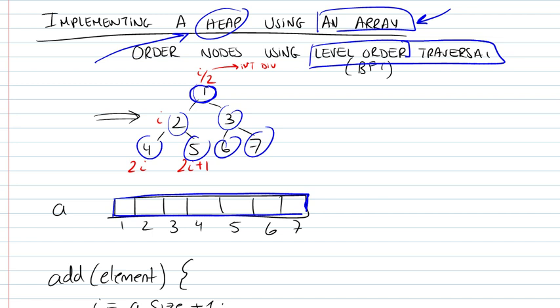So these by the way are not the elements, these are the indexes of the array. So element 1 in the array will actually be this one. Whatever is in here will be contained in element 1 of the array. 2 will come here, 3 will be here. So if you notice I'm actually just doing a level order traversal of the tree and I'm just placing all the elements in my array. So this is how I'm going to be representing it in code.